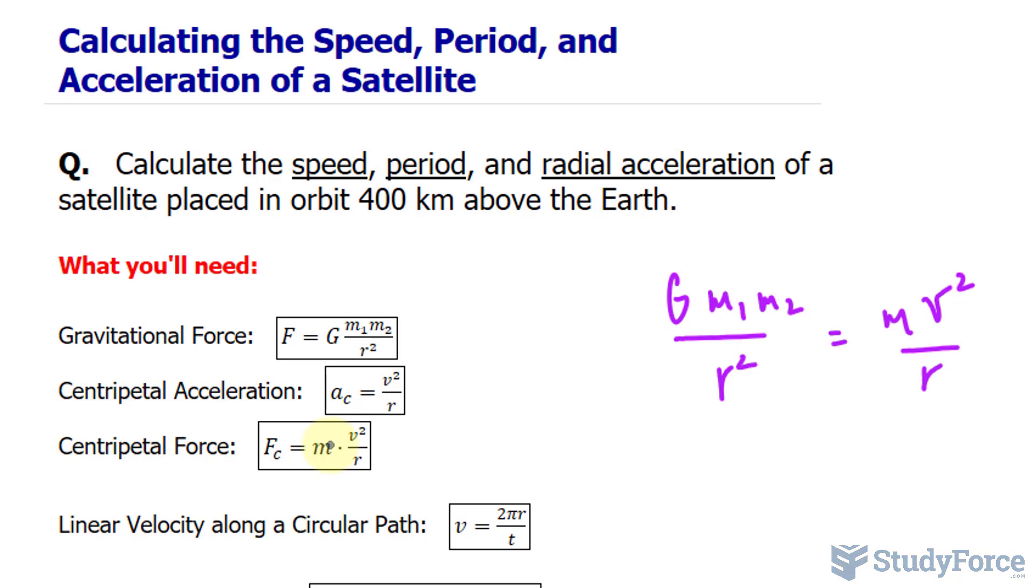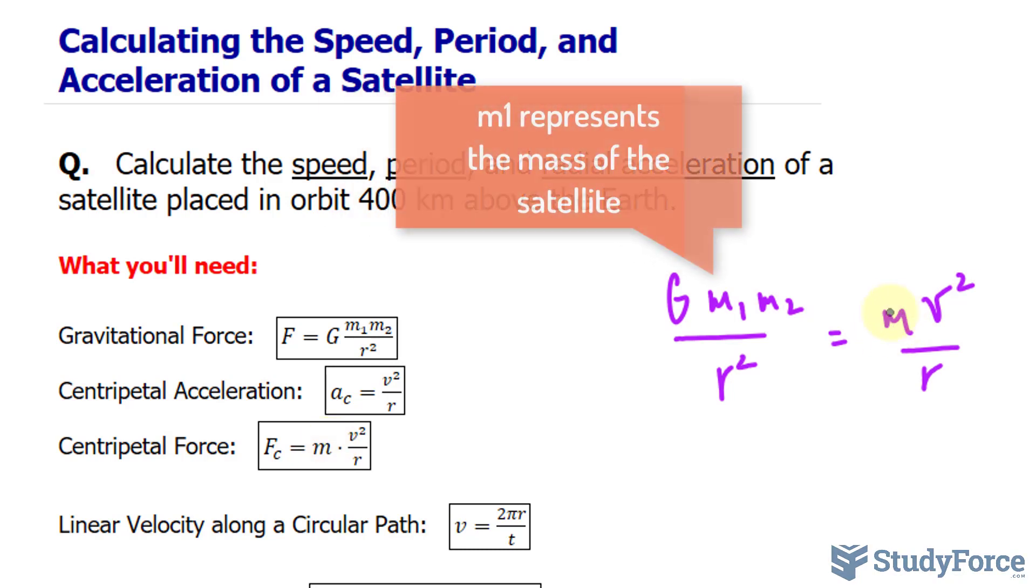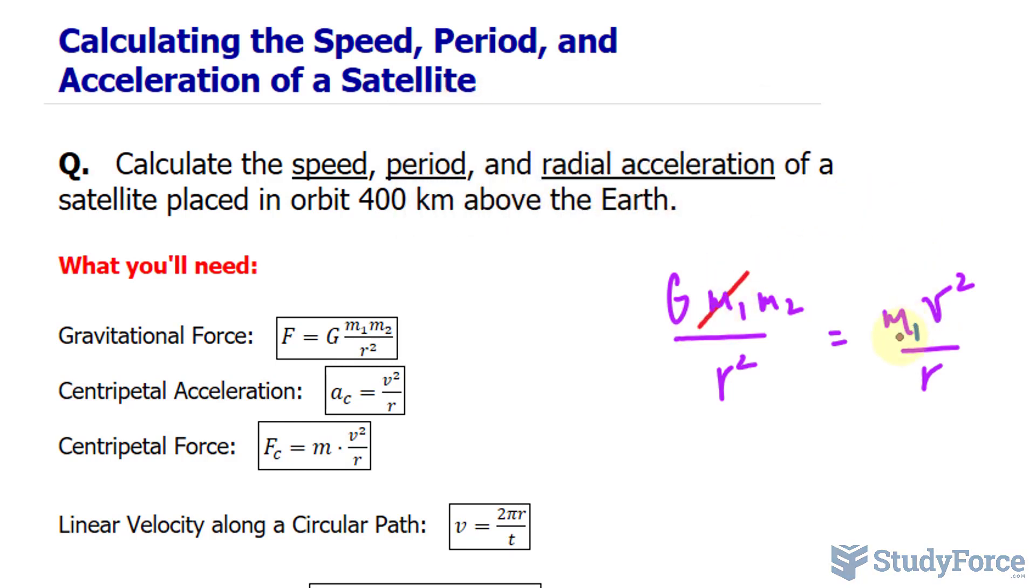If that's confusing, let me show you what I mean. If I set this mass as m₁, you'll have an m₁ factor on the left side and one on the right side, and that means they cancel out. Solving for v, I multiply both sides by r.